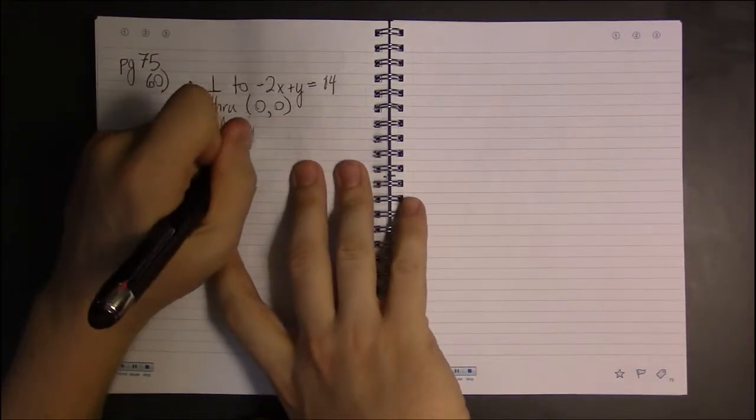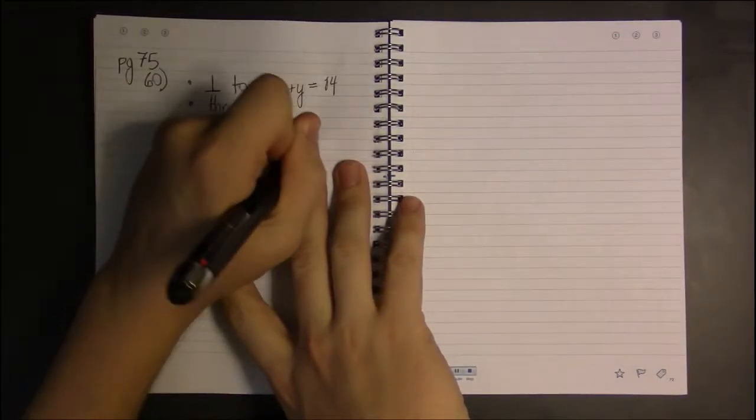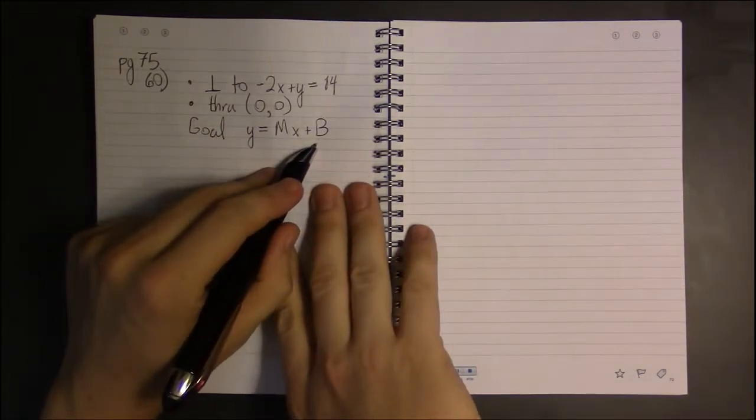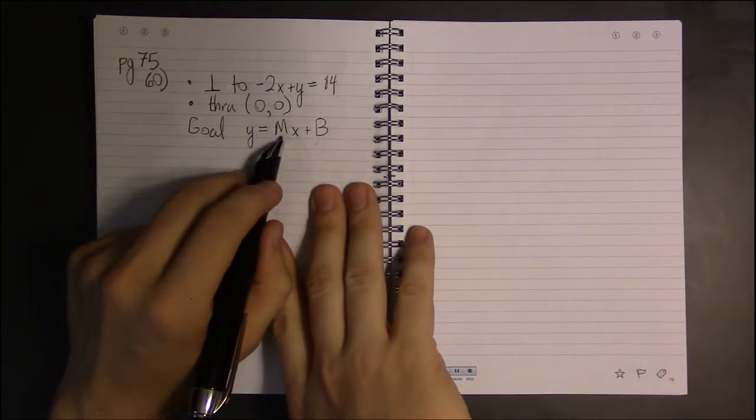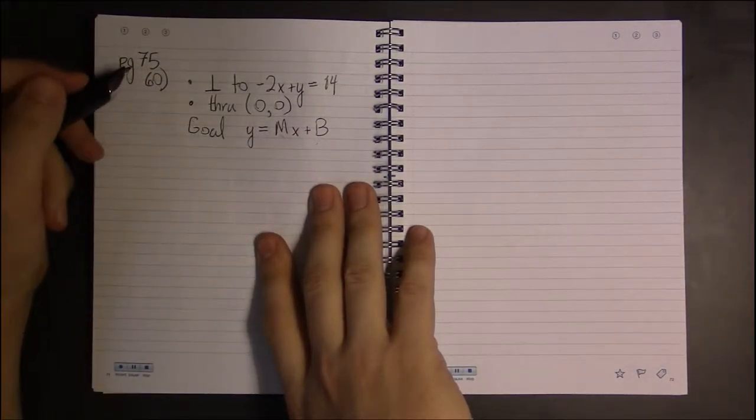As usual in this section, our goal, our answer, is going to look something like this: y = mx + b. Our task is just to find out the particular values of m and b that give us these properties.